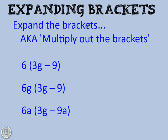And here are some examples. Expanding the brackets, also known as multiply the brackets. 6 brackets 3G take away 9. So you do 6 times 3G gives you 18G. If you're not sure about why that's 18G, then click on the bubble that's just appeared, and that will take you to a video about multiplying variables and numbers together.